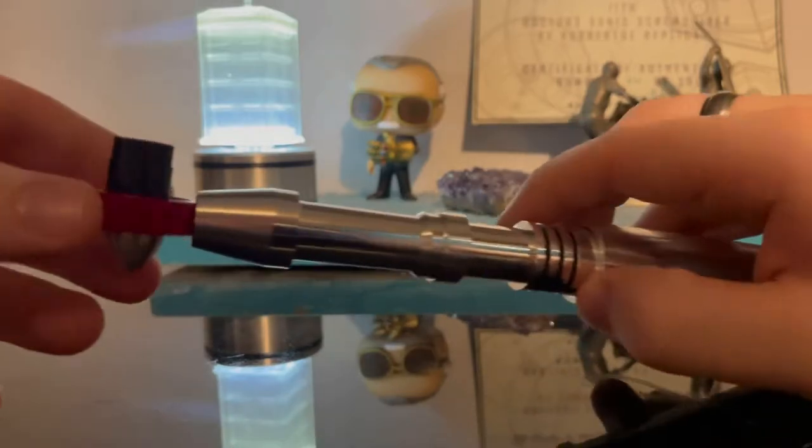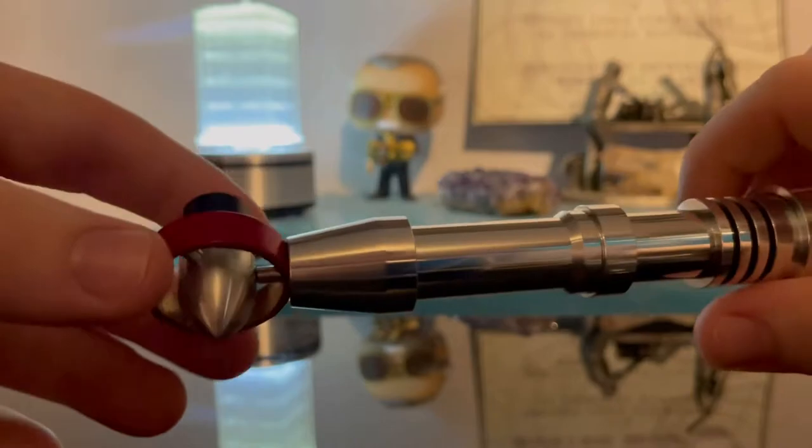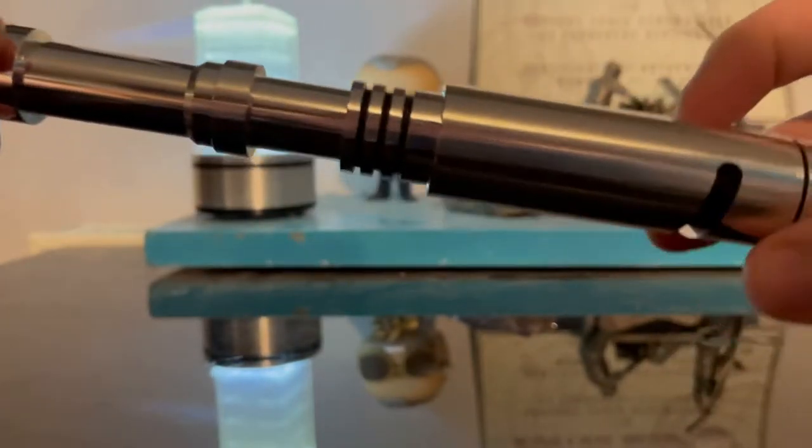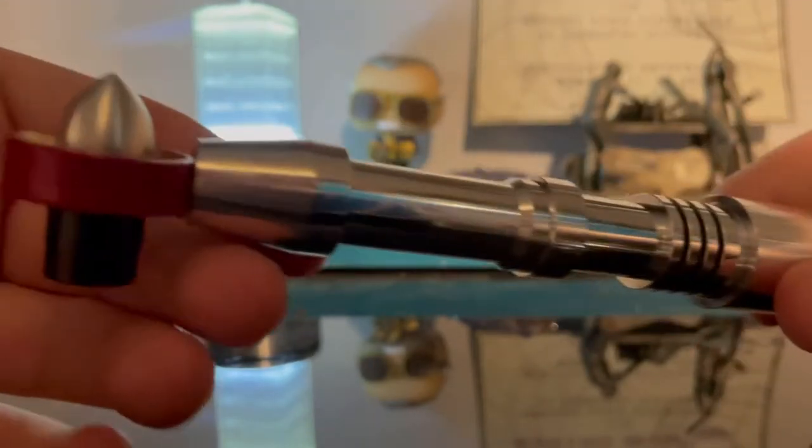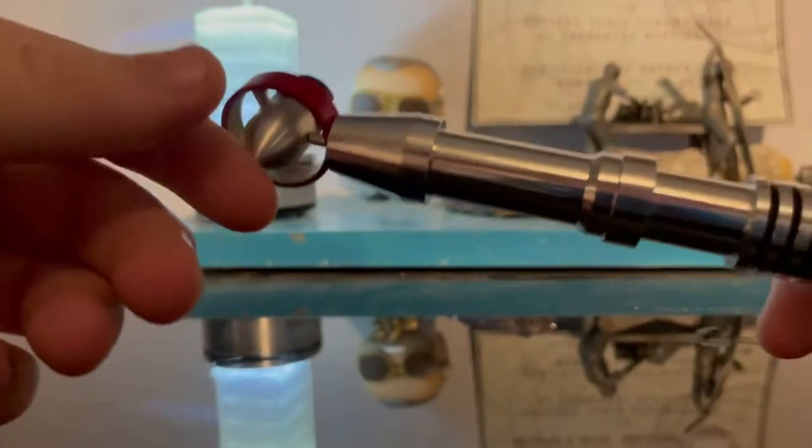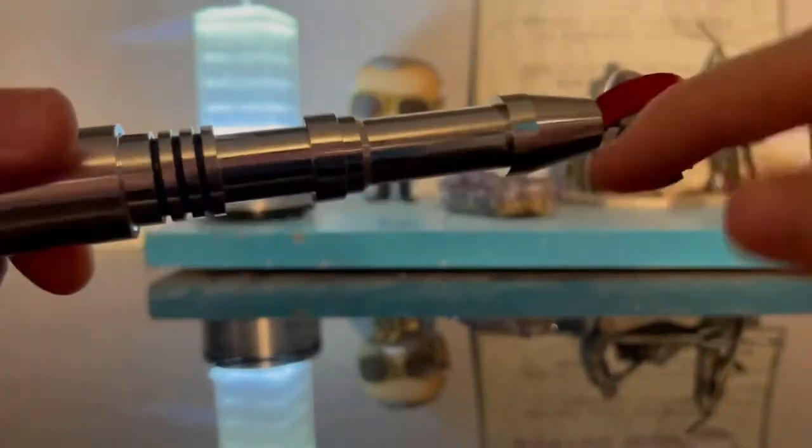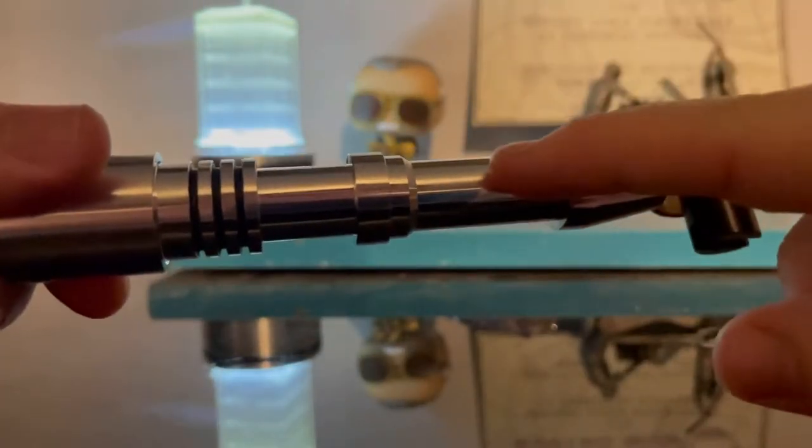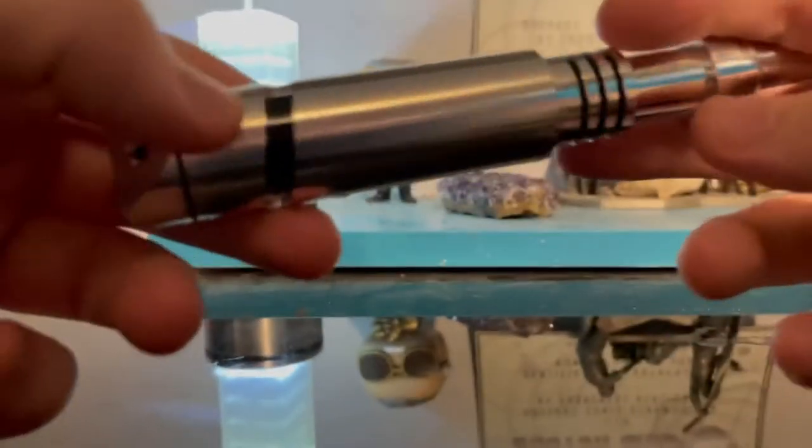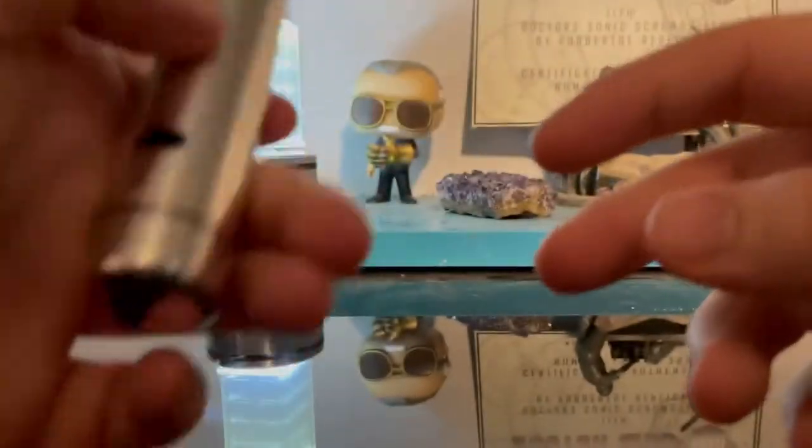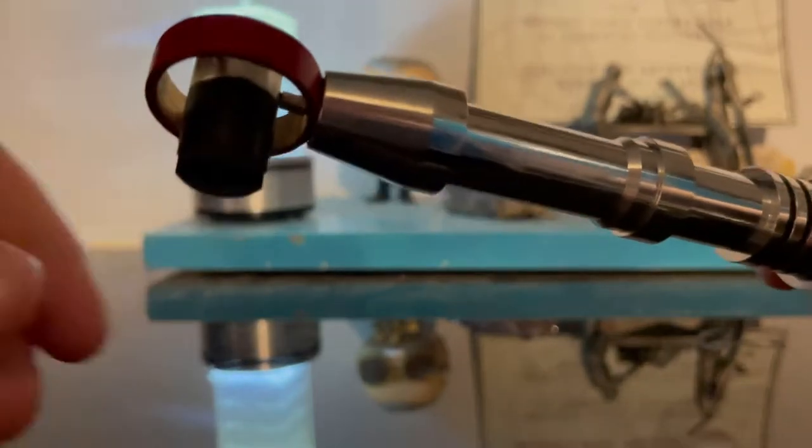And this is the Pertwee 2 sonic screwdriver. So this is the one that Jon Pertwee used in his last season. What happened was basically the sonic was going through a bit of an upgrade and they decided to strip off the spiral and strip off the details on the handle there and they decided to throw a magnet on.